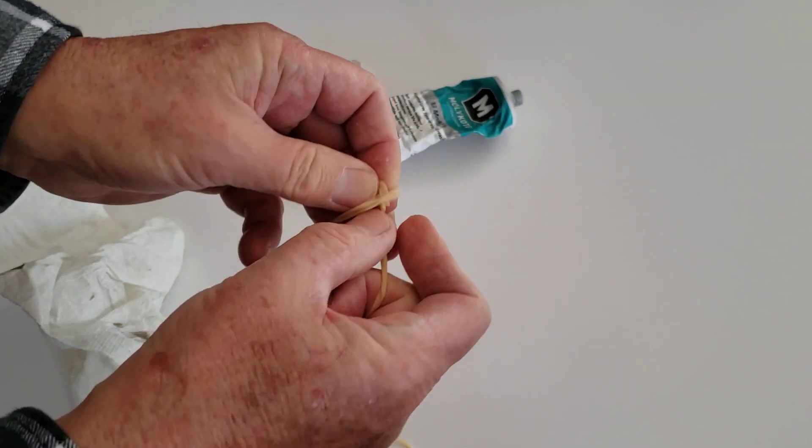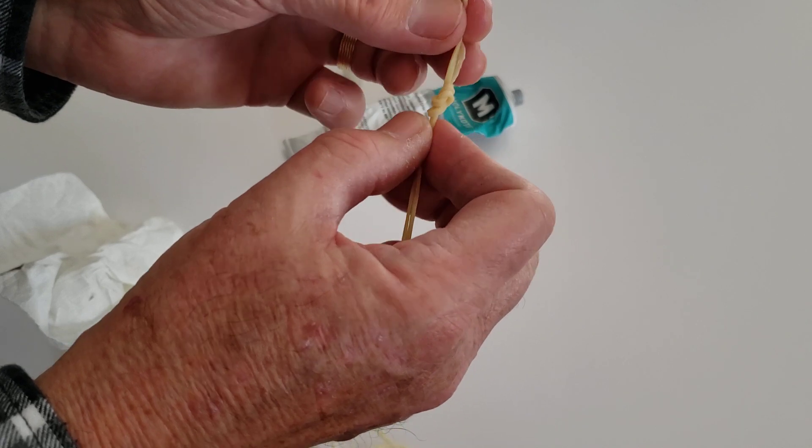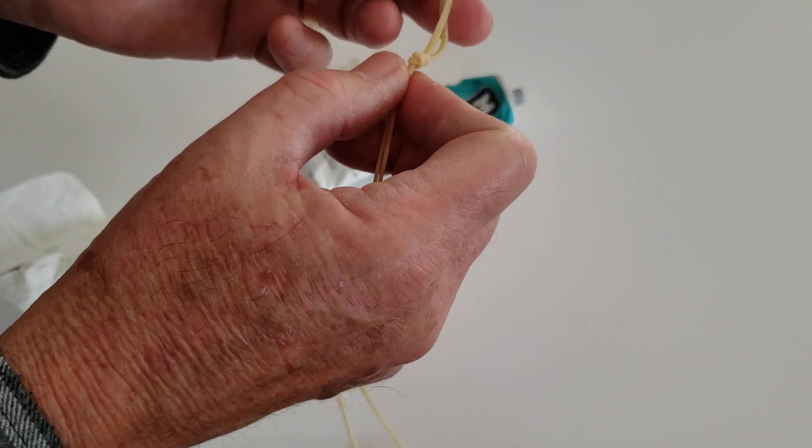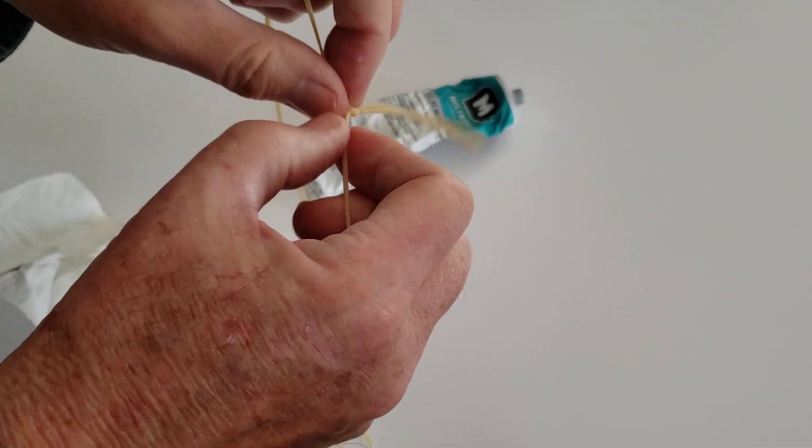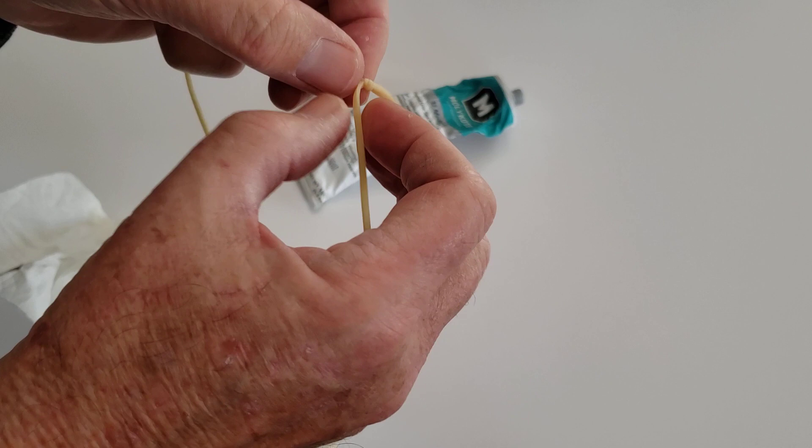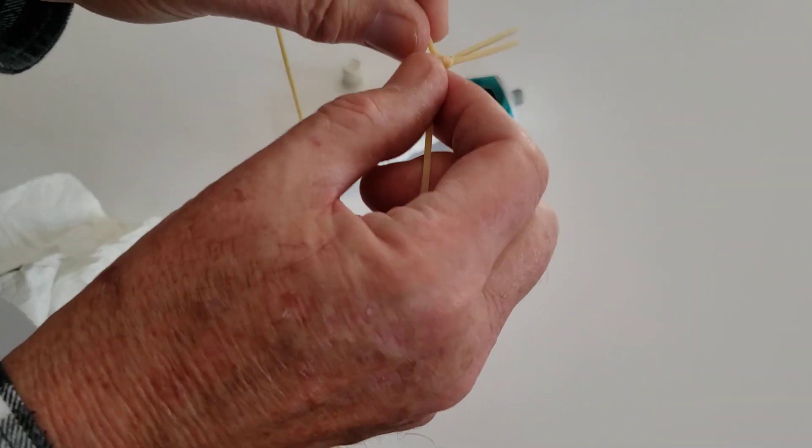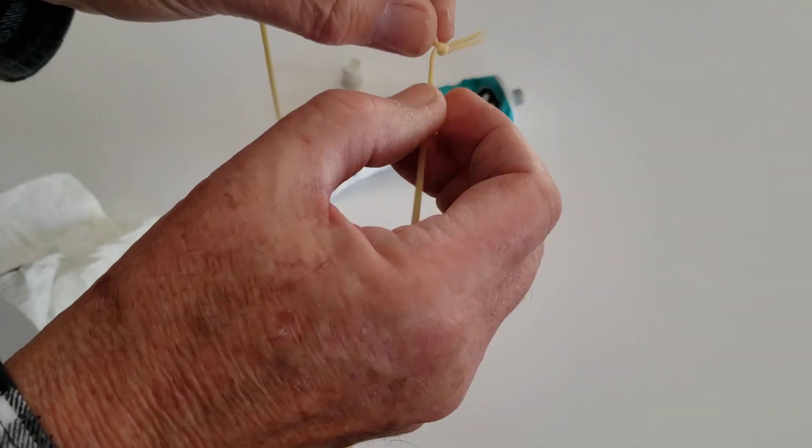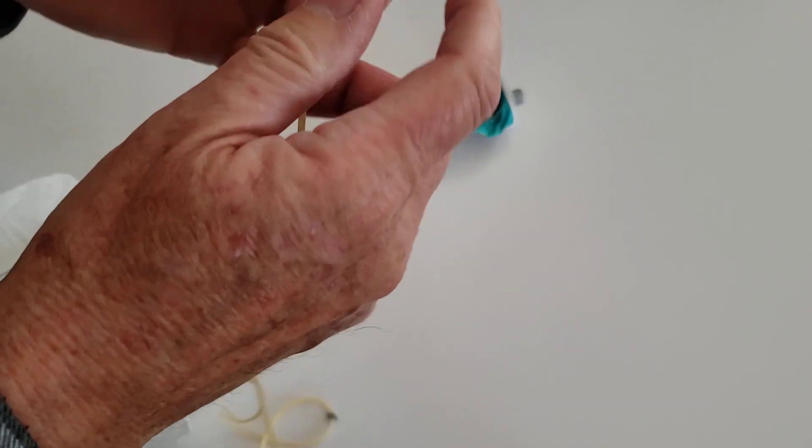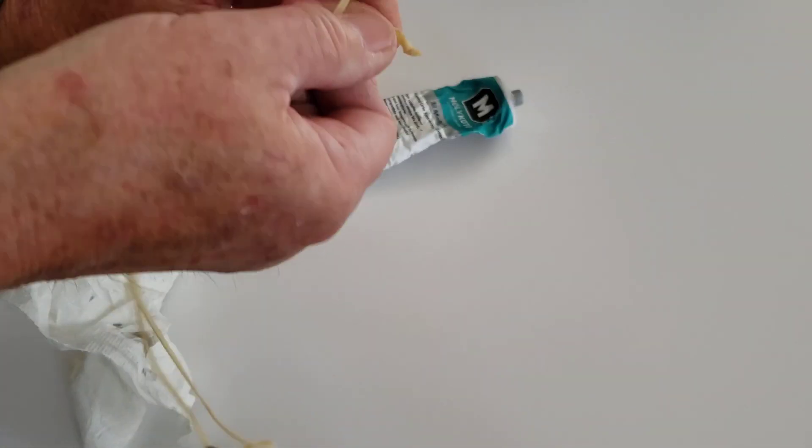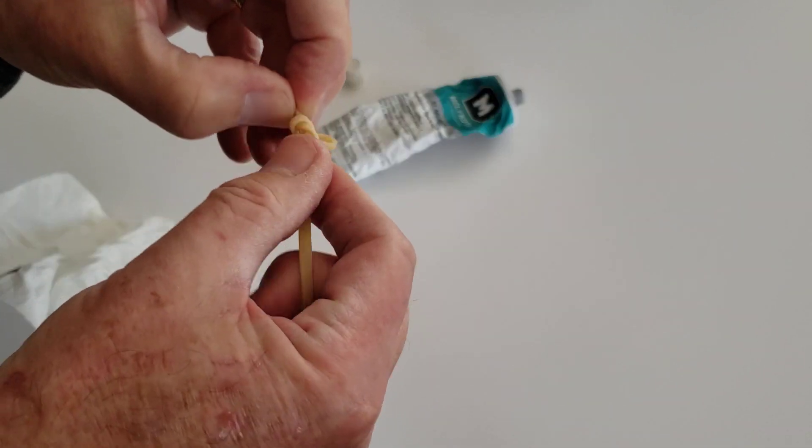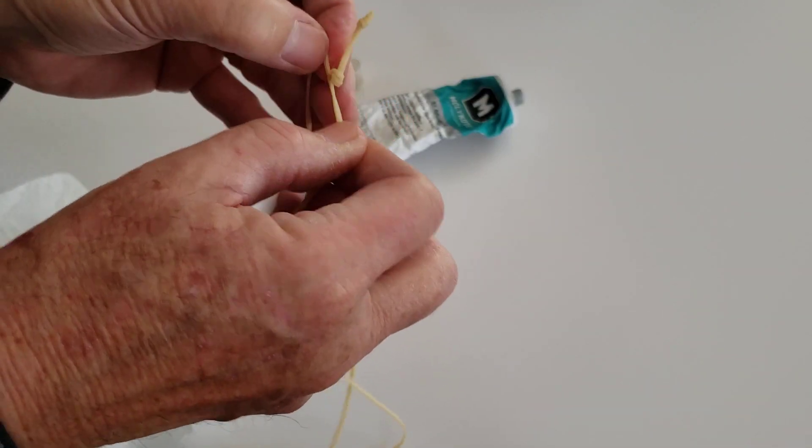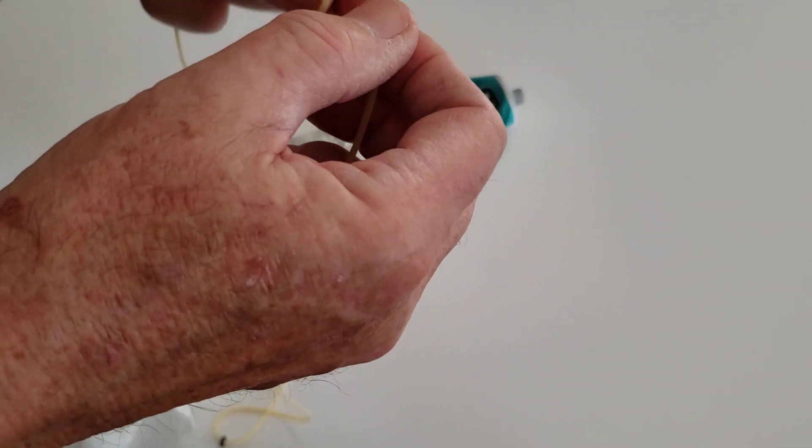I cinch it down. Try to keep the ends kind of straight. Now I squeeze this down like this to get that knot towards the very, very end. I'm darn close there. Now this time I do an overhand knot the other direction. Tighten it. Cinch it down. There.